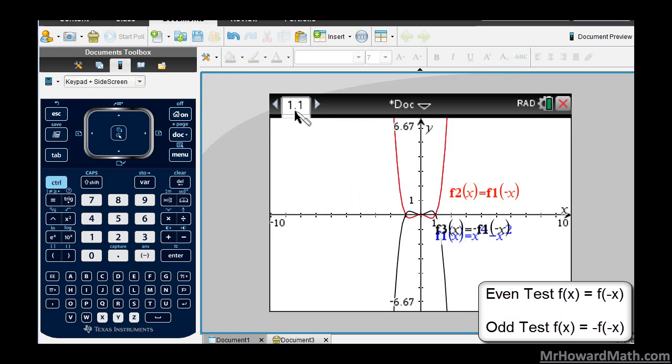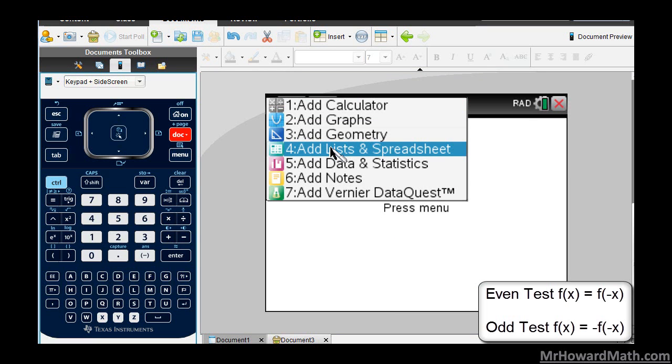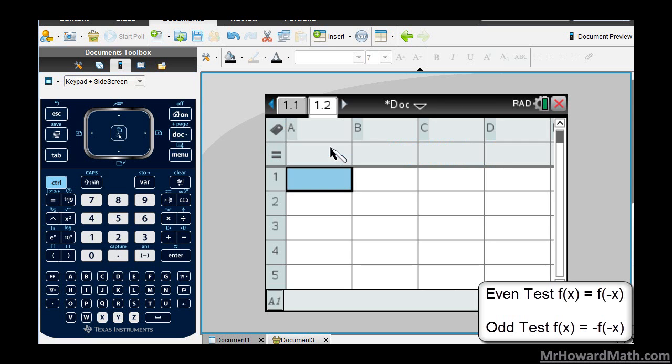We're going to add a page to this document. This page, 1.1, is a graph. If I want to add a page, control doc, you see plus page right there. That's how we access it, control doc, and I want a list and spreadsheet. I'm going to choose option 4 here and add that.